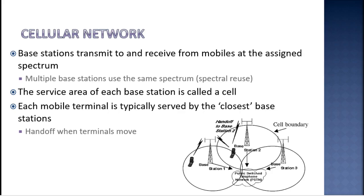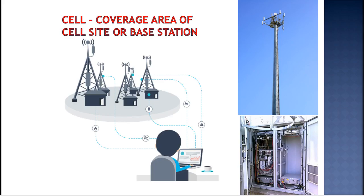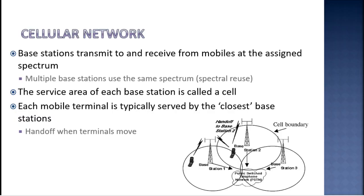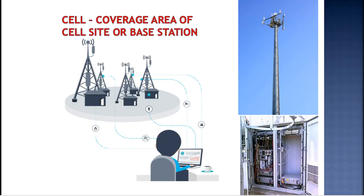Each mobile terminal — whether it's a device, laptop, mobile phone, tablet, or iPhone — is typically served by the closest base station. So as you move, you will get signals from the nearest base station, allowing users to cross different cells without losing their connection. Within each cell there is a base station which sends and receives the mobile signals.